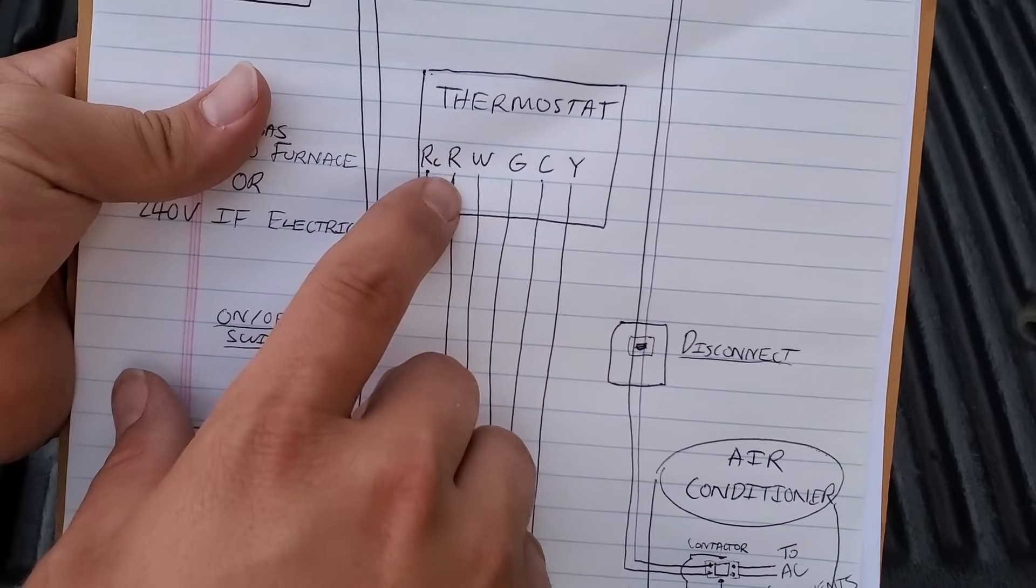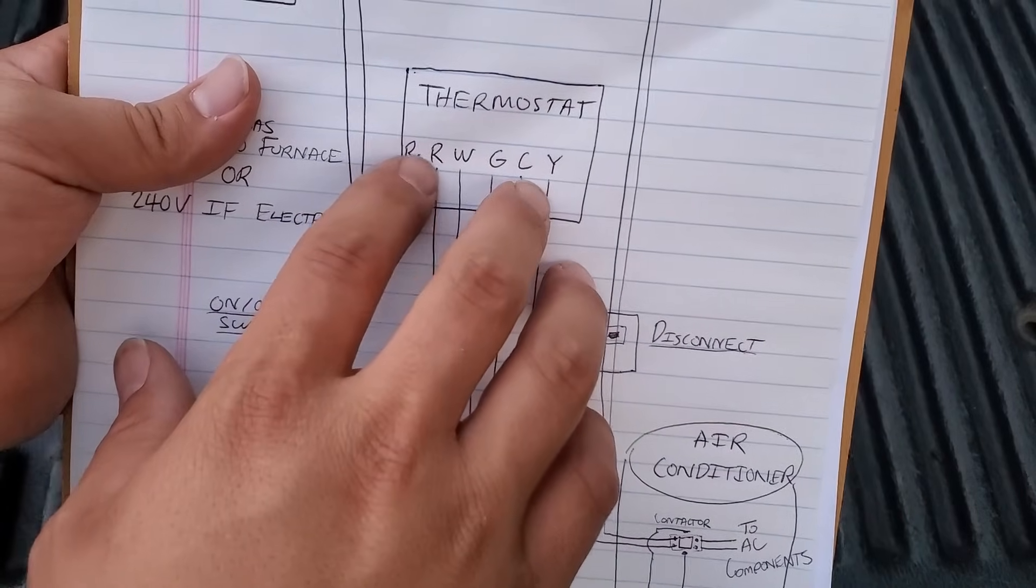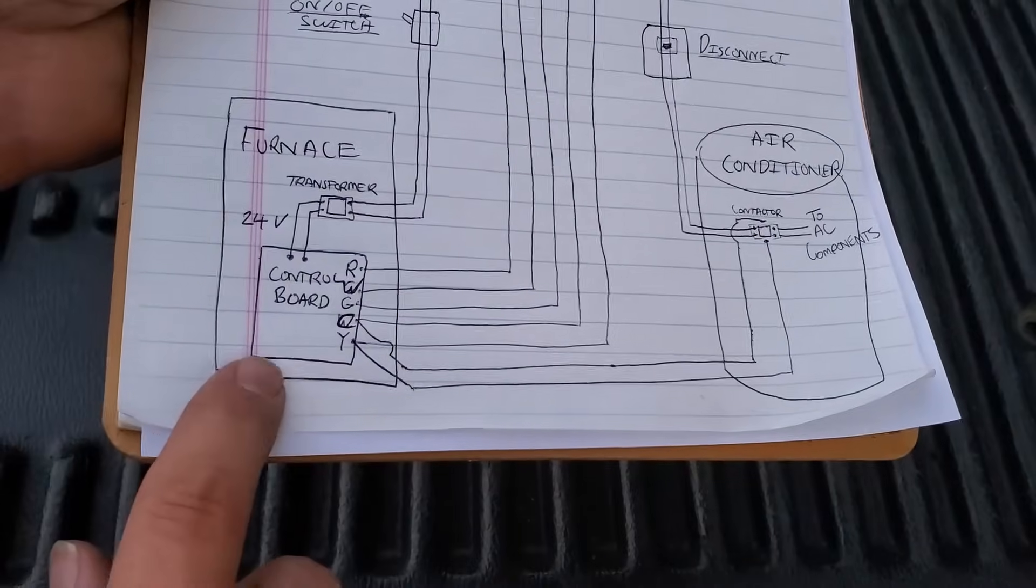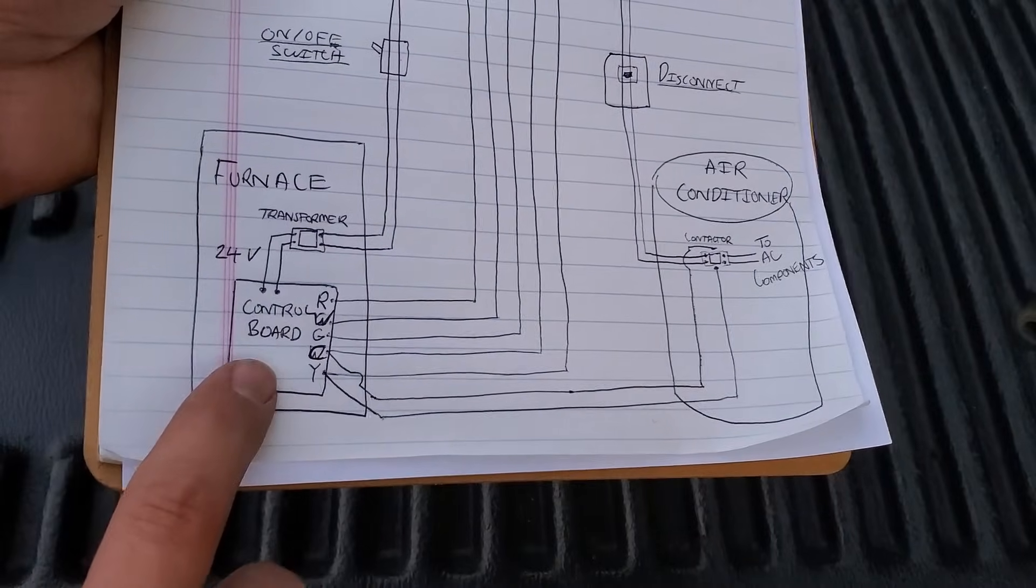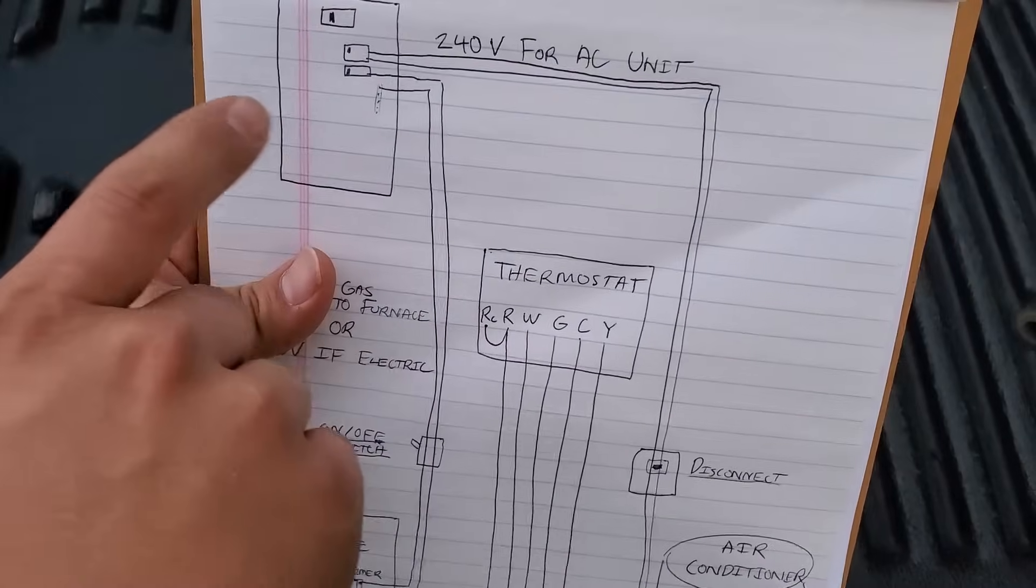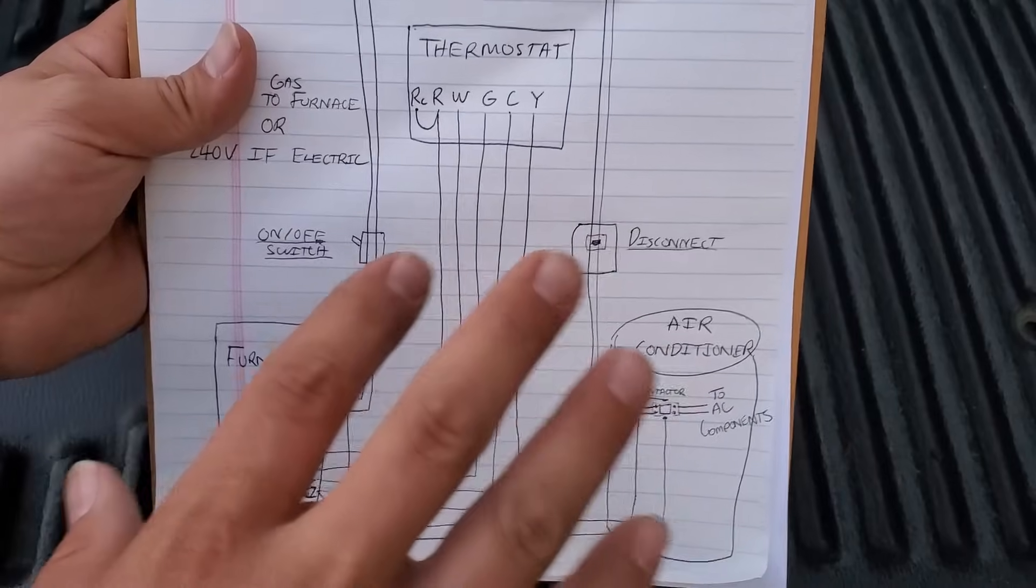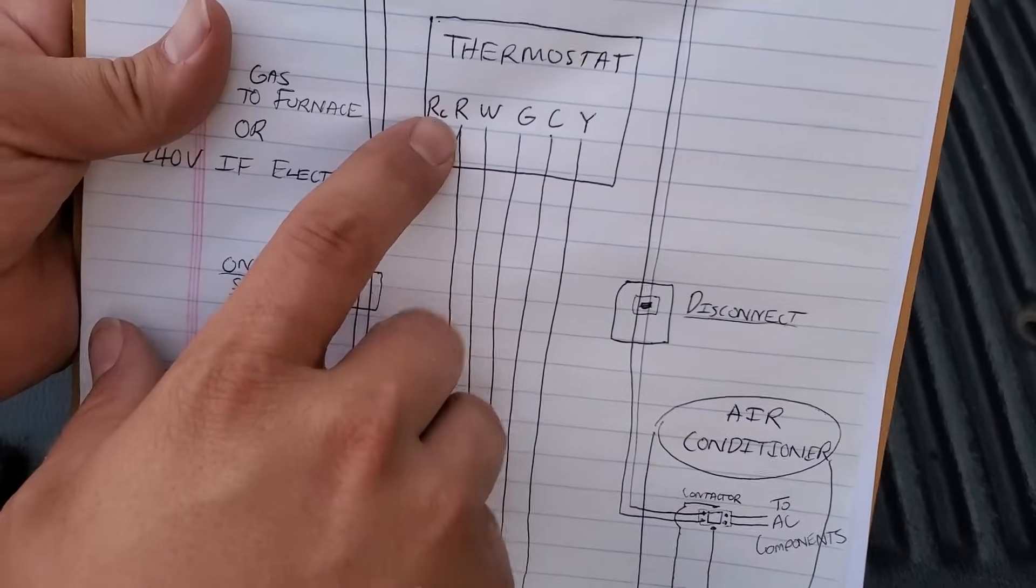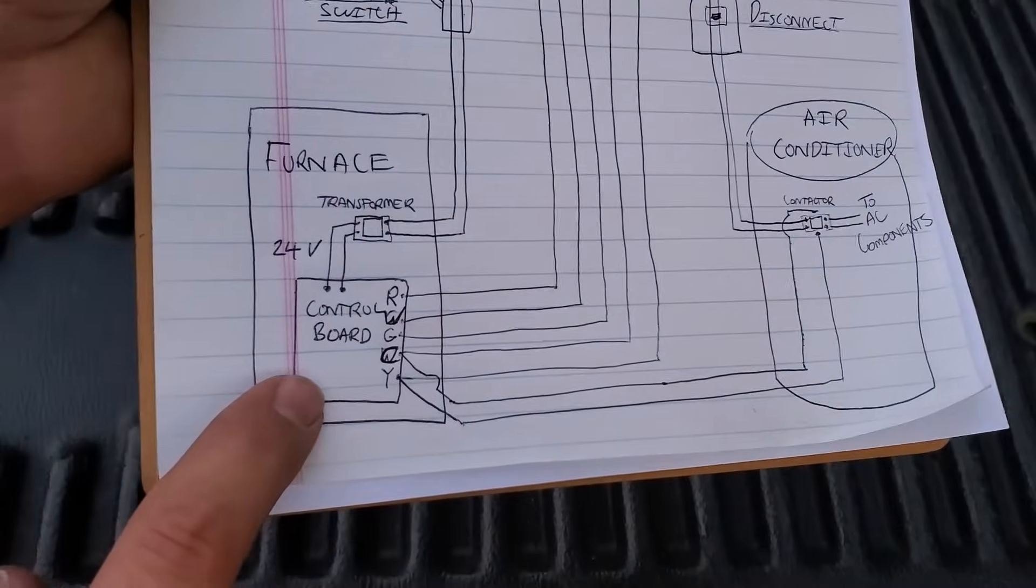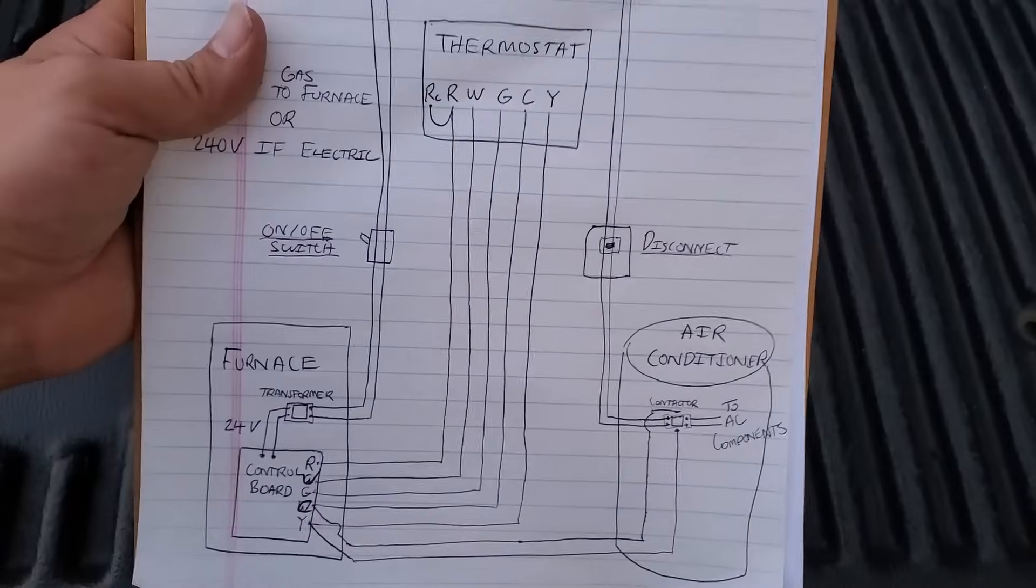Well now what about R to C? If we were to jumper R to C, unfortunately that would be a very bad thing because that would create a direct short and you'd be shorting out that 24 volt circuit, and a little fuse located down on the control board would pop. That's why whenever you work on your thermostat or air conditioner, you want to also turn off the power to the furnace so that you don't have any 24 volts. Because if you short out the R to the common, then it will pop a little, I think it's typically 3 or 5 amp fuse on the control board.